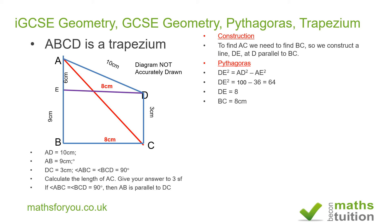We are now in a position to find the length of AC. So AC² equals AB² plus BC² from Pythagoras, because AC is the hypotenuse.